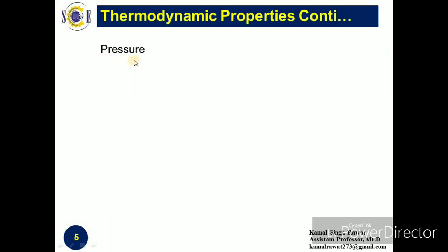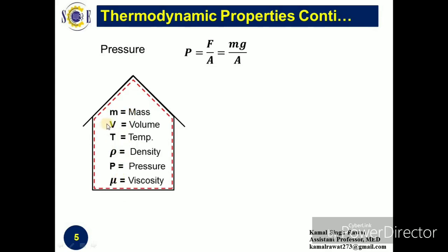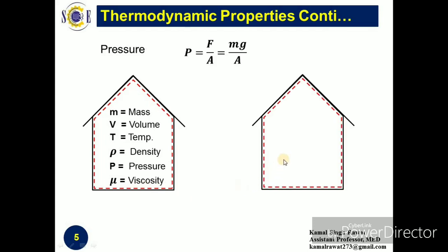Let us take pressure, which is an intensive property. Pressure is defined as force upon area, and force is mass times acceleration. If we look at the formula of pressure, it depends upon the mass of the system — so how is it an intensive property? To resolve this, let us do an exercise. Consider a room filled with air. Air is our system and the room boundary is our system boundary. The properties of this system are: m is the mass, v is the volume, t is the temperature, rho is density, p is pressure, and mu is viscosity. We want to identify which properties are extensive and which are intensive.